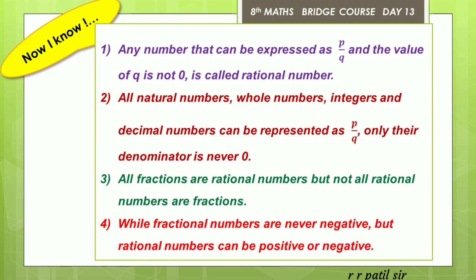The first key concept: any number that can be expressed as P upon Q, where the value of Q is not 0, is called a rational number. The second concept: all natural numbers, whole numbers, integers, and decimal numbers can be represented in the form of P upon Q — only their denominator is never 0.